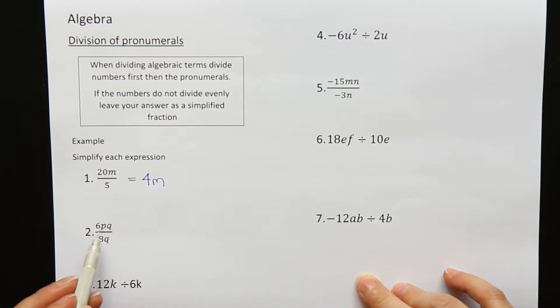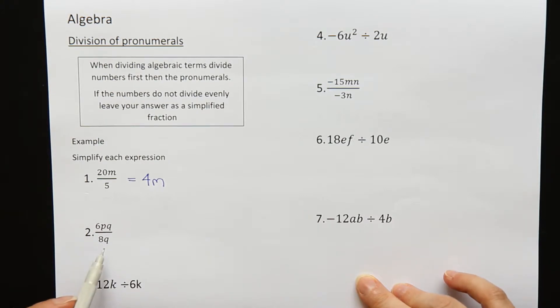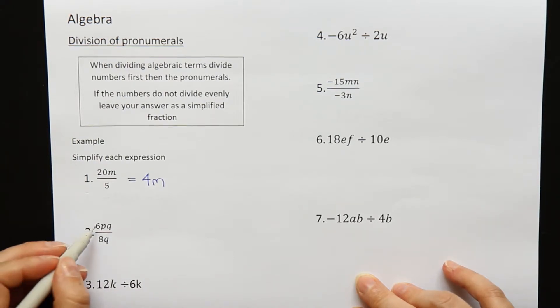Question two. 6pq divided by 8q. All right, I want to do 6 divided by 8. Oh, that's not going to work without getting a decimal. So what I want to do is I want to try and simplify them as much as possible.